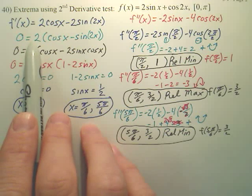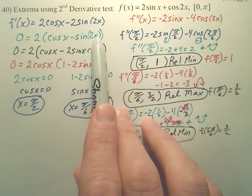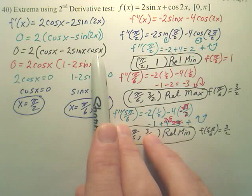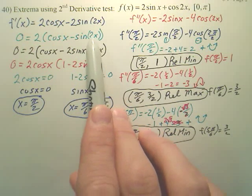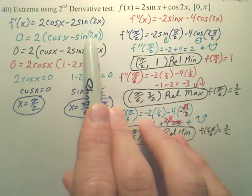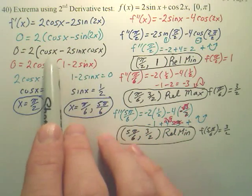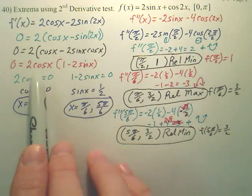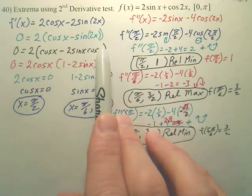Now pull out a GCF of 2, and replace sine 2x with the double angle formula, which is 2 sine x cosine x. It's a bit tricky to remember. Then, as you can see, I pulled a cosine x out of both terms.